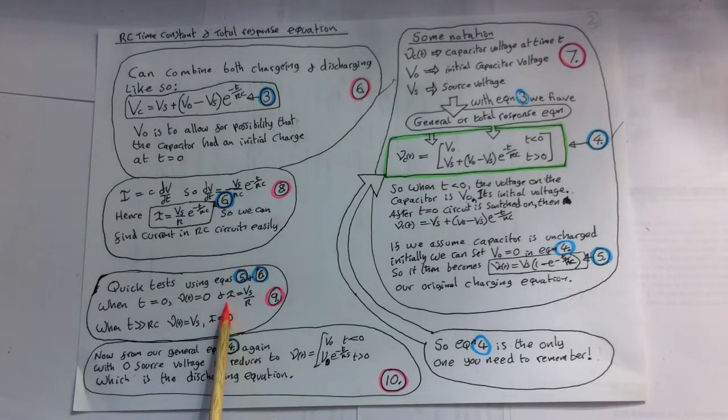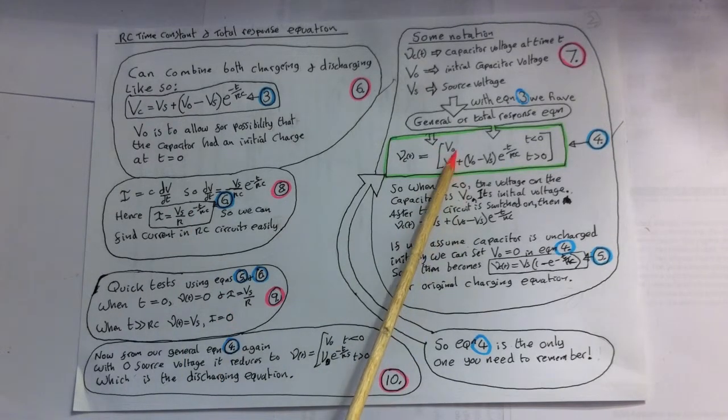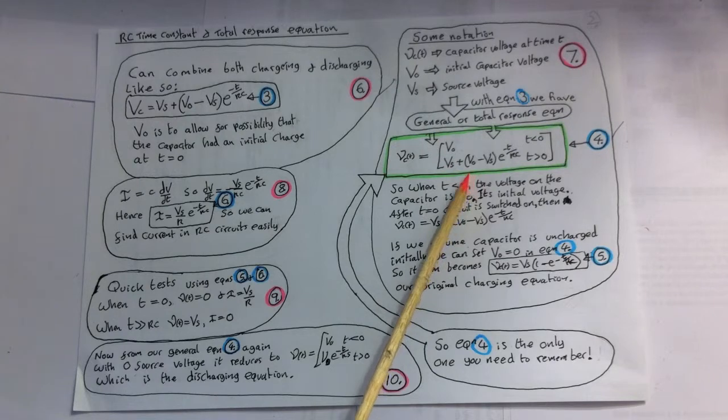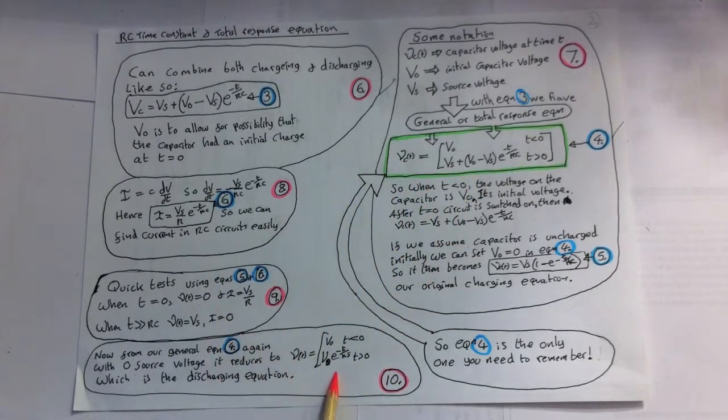Now, looking at our general equation 4, again, we can also see that if we had no source voltage, in other words, Vs equals 0, then equation 4 reduces to this equation here, which is the discharging equation.